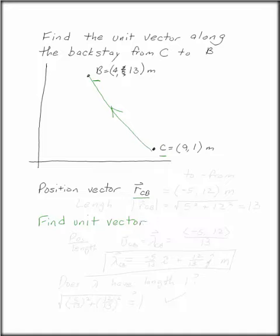The position vector has to be the place you're going to minus where you're coming from. So this will be (-5, 12).